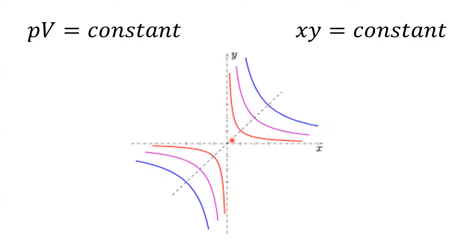Here is a set of hyperbolas for which the constant takes on different values. Suppose the constant was the number one — XY equals one. We can identify one point: if X is one and Y is one, one times one is indeed one. So this red curve is the locus of points satisfying that equation. For the curve where X equals two and Y equals two, two times two is four — that must be the locus of points satisfying the equation with value four on the right-hand side. You just plug in different values on the right side and you get a different hyperbola.